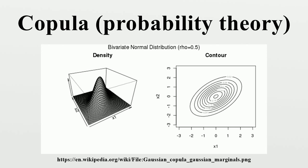Turbulent combustion: Copulas are used in modeling turbulent partially pre-mixed combustion, which is common in practical combustors. Medicine: Copula functions have been successfully applied to the analysis of neuronal dependencies and spike counts in neuroscience. Weather research: Copulas have been extensively used in climate and weather-related research. Random vector generation: Large synthetic traces of vectors and stationary time series can be generated using empirical copulas while preserving the entire dependence structure of small data sets. Such empirical traces are useful in various simulation-based performance studies.